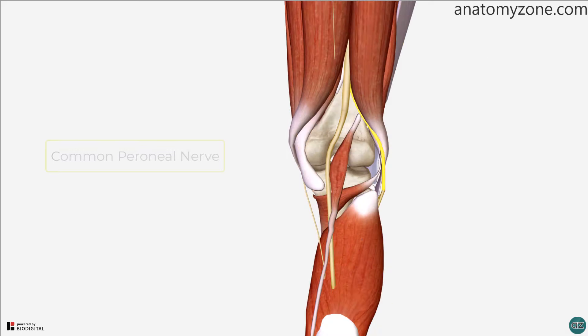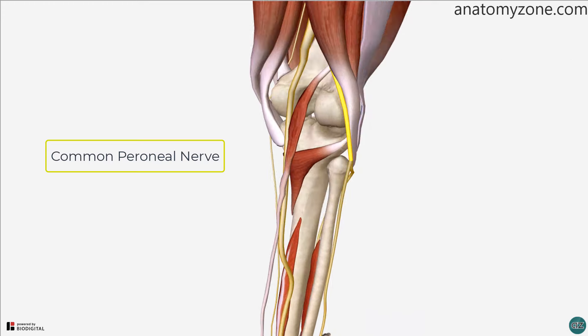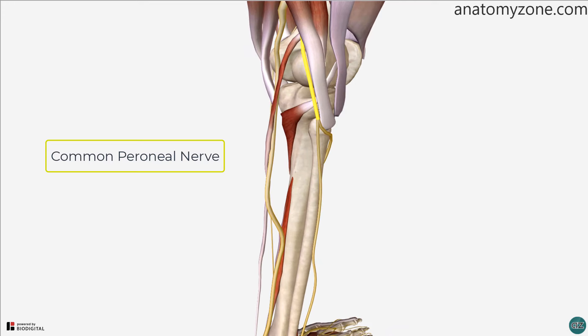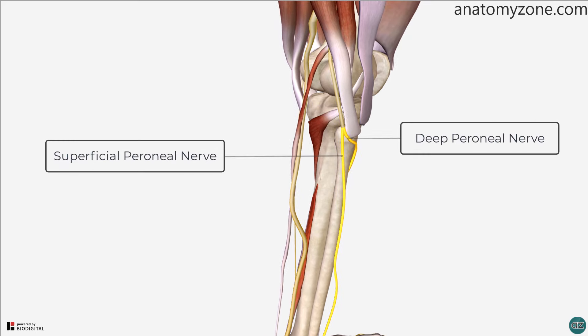The common peroneal nerve leaves the popliteal fossa by following the tendon of the biceps femoris. It winds around the neck of the fibula to enter the lateral compartment of the leg, branching into the superficial and deep peroneal nerves.